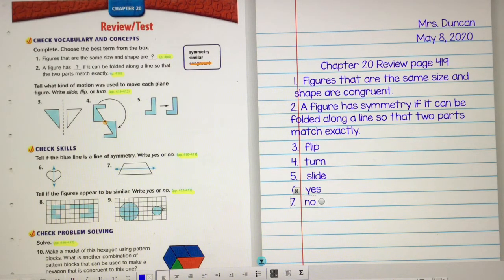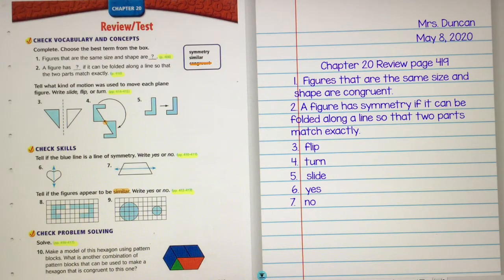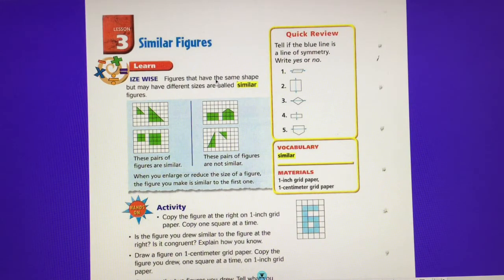Okay, eight and nine. We're talking about whether the figures appear to be similar, not congruent, but similar. Let's go ahead and turn to page 412 to look at the definition of similar. Figures that have the same shape but may have different sizes are called similar. So look at these triangles are the same shape, but they're different sizes. These are both squares but different sizes. These two are not the same shape at all. And those two, yes, they are triangles, but look how this one is tall, like it's tall and skinny. This one's more even. So similar, they have to have the same shape, but they can have different sizes.